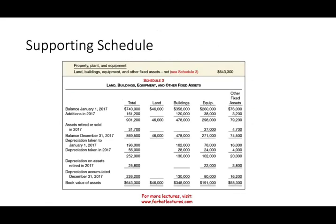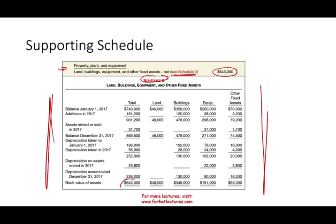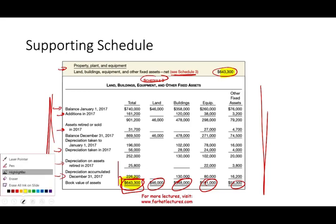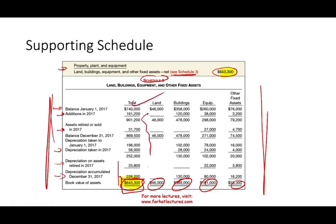Last but not least is the supporting schedule. For example, property, plant, and equipment shows $643,300 on the balance sheet with a reference to 'see schedule three.' In schedule three, they provide a full breakdown: beginning balances for land, building, equipment, and other fixed assets; how much was purchased; how much was sold during the year; how much depreciation was taken; and the accumulated depreciation at the end. On the balance sheet you only see one figure, but the supporting schedule gives users much more information about what's going on.